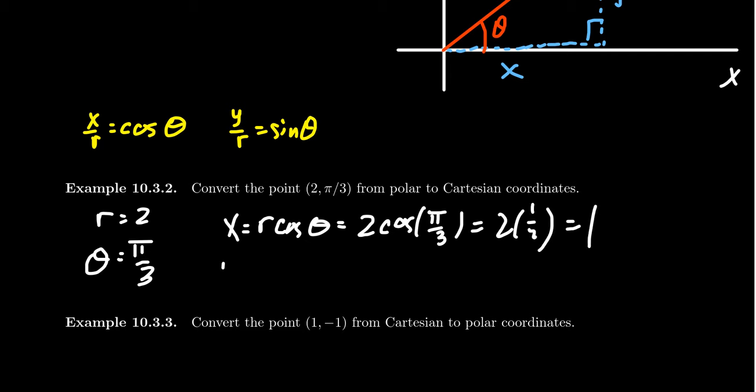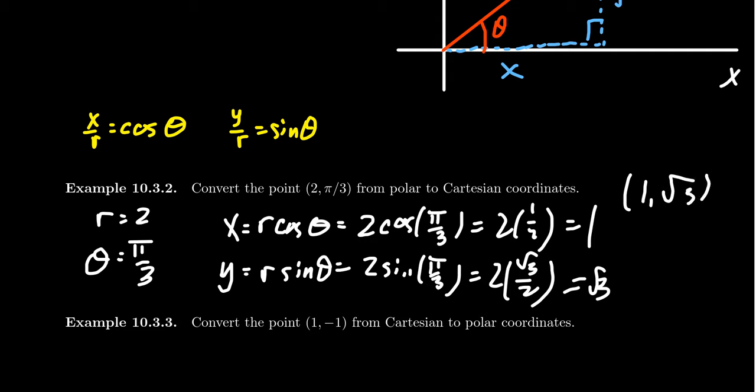To find y, you use r sine theta, which is 2 times sine of pi thirds. Sine of pi thirds is root 3 over 2. The 2s cancel and you get the square root of 3. So the Cartesian coordinate associated to the polar coordinate 2 comma pi thirds is 1 comma square root of 3. That's all you have to do to switch from polar to Cartesian coordinates.